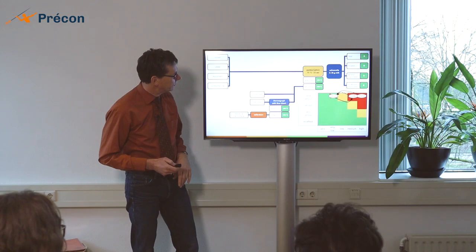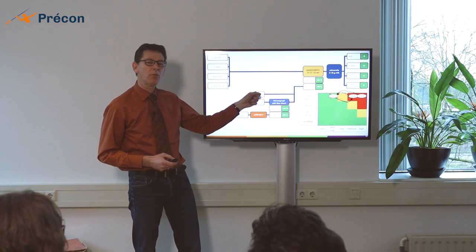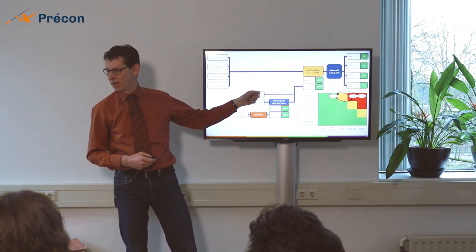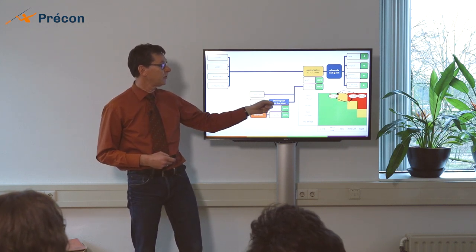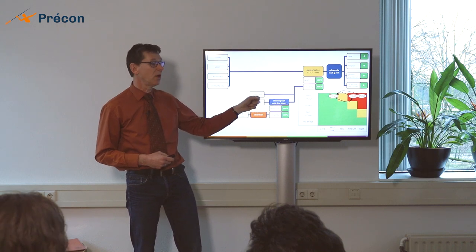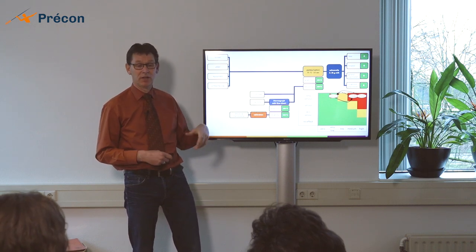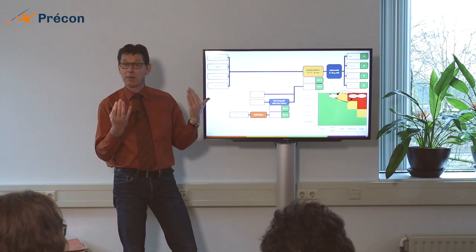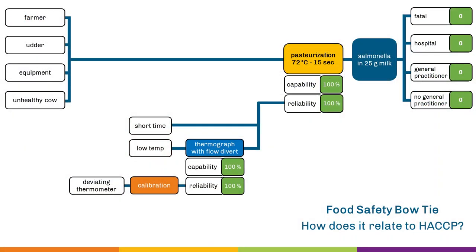Interesting thing to see also is that there was no reliability problems with the short time. In the laws that we introduced in the 1950s, we had to monitor the temperature, but there was no reliability problems with short time. And it's basically because of the technical build-up of this piece of equipment. Short time was no problem. Short time is no problem, the temperature is. So it's all a reliability thing. So this is what a food safety bowtie looks like. And it taught me a lot about HACCP.